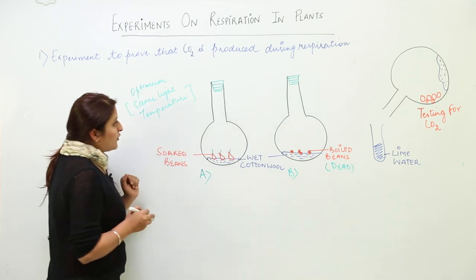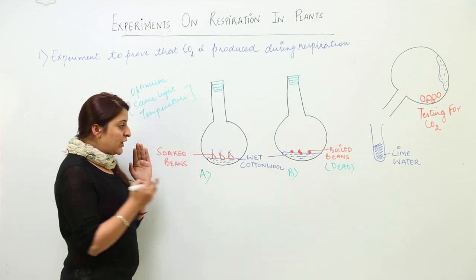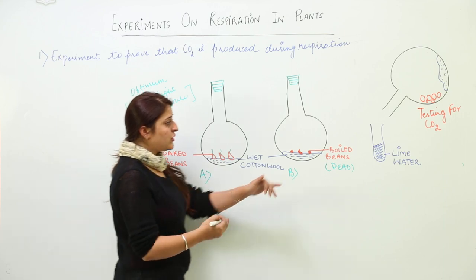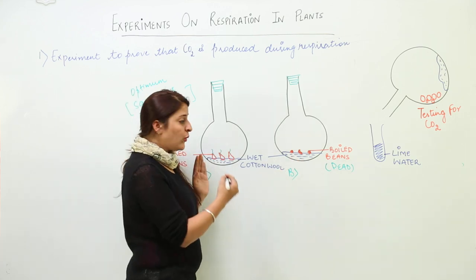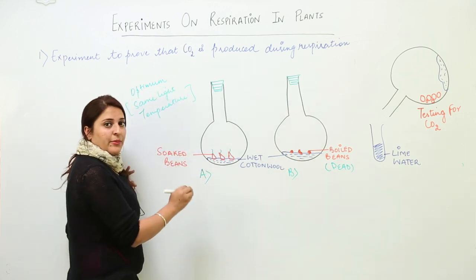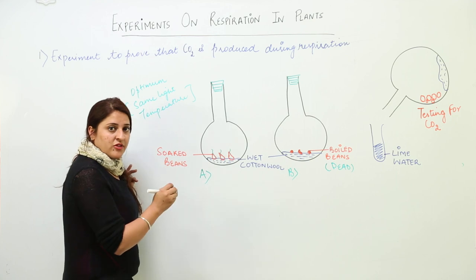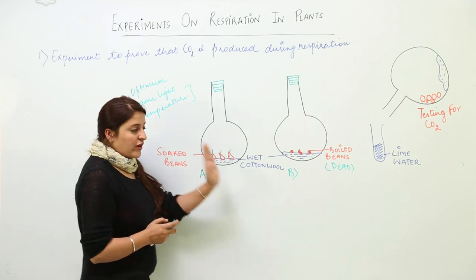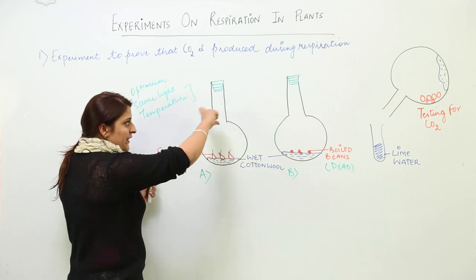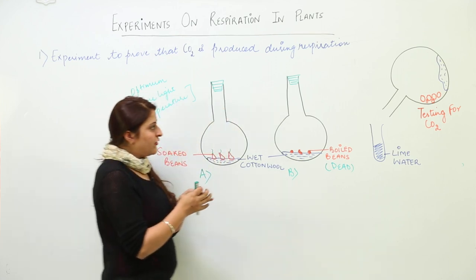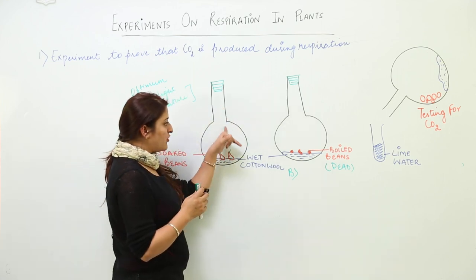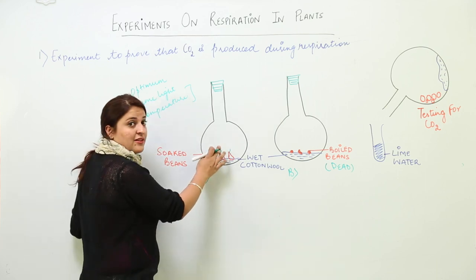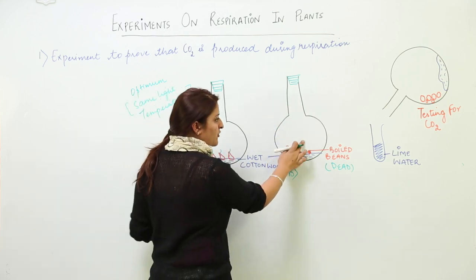We need to determine whether carbon dioxide was produced during germination in flask A, or whether carbon dioxide is produced by the dead beans in flask B. We will tilt the flask to check the presence of gas — specifically, which gas is present in each flask.